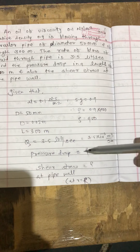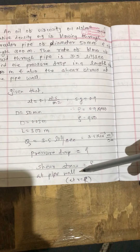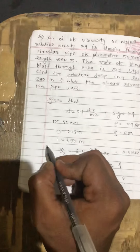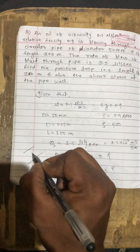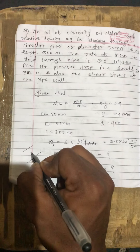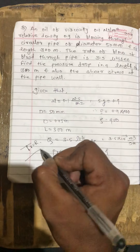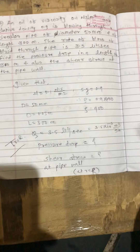Shear stress at the pipe wall means that small r becomes capital R, because this is the pipe section and from this you measure the radius. At the pipe wall, small r = capital R. Now the first thing is to find out the pressure drop.